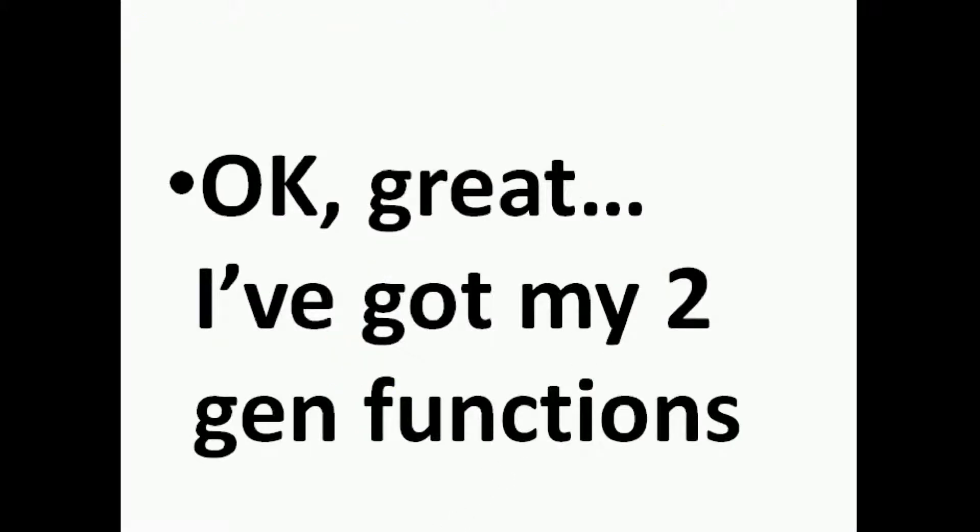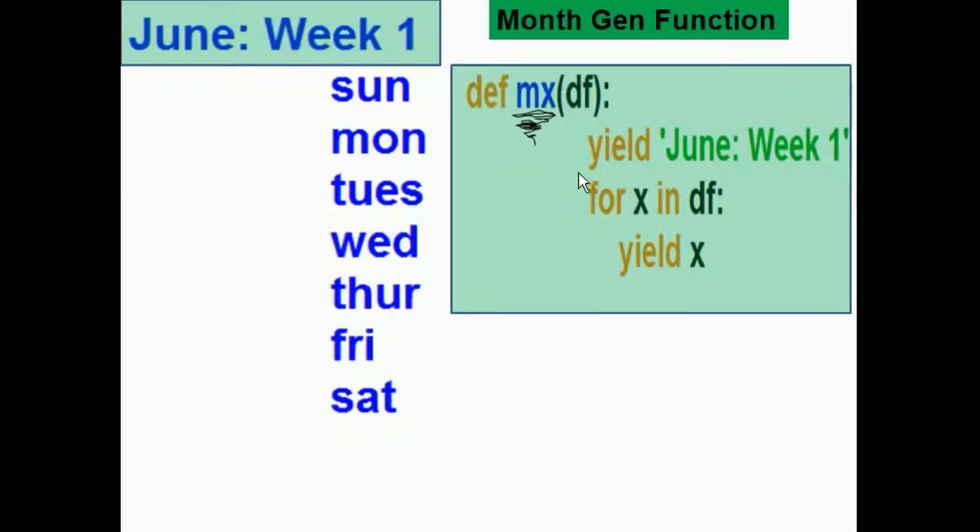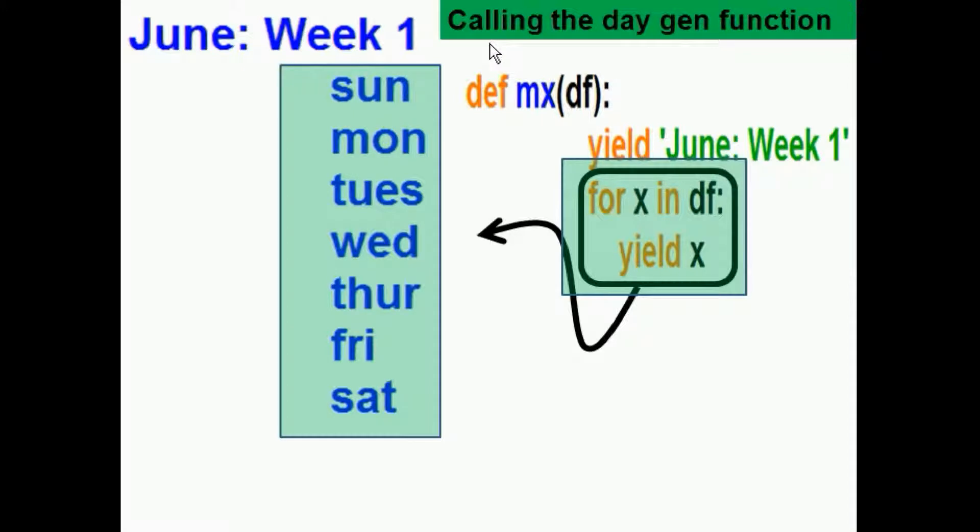Okay, great. I've got my two generator functions. One is the month generator function that's going to print out June week one. It's called MX. It'll yield June week one. And then it'll also perform another function calling the day generator function. That's in the variable DF. For X and DF, this many times, it'll perform this loop. It'll yield X. Let's see what that means.